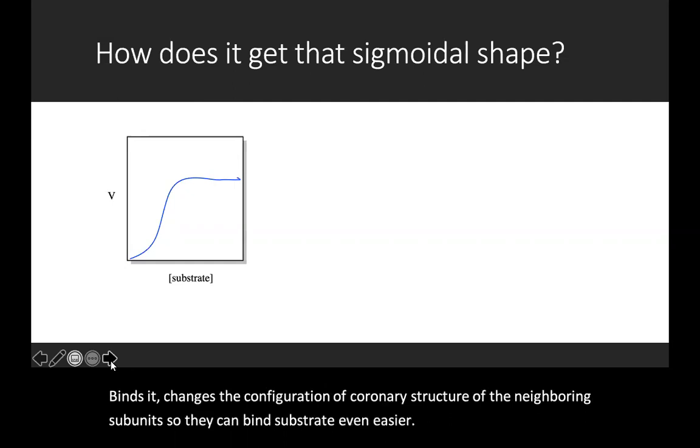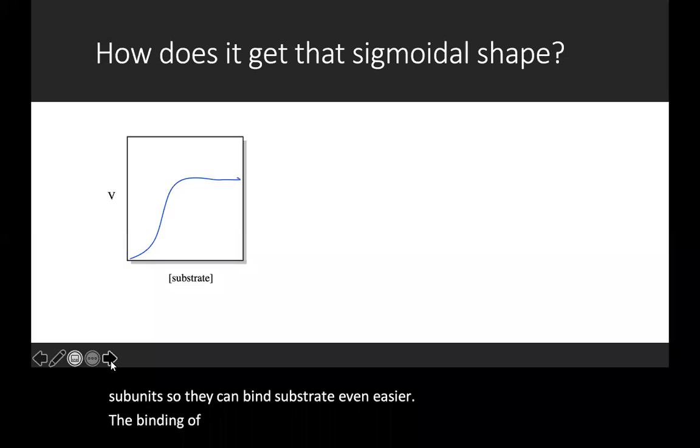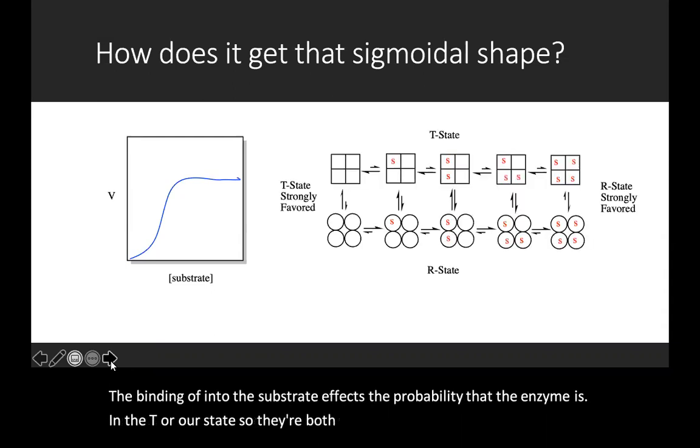Concerted, the binding of the substrate affects the probability that the enzyme is in the T or R state. So they're both affecting the ability of substrate to sequentially bind.